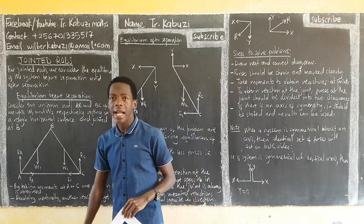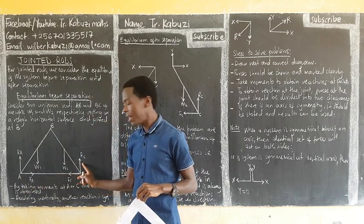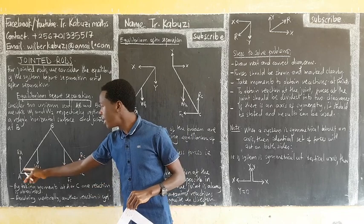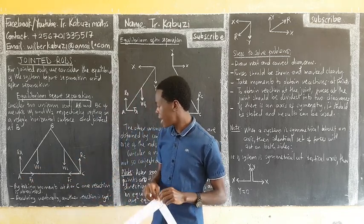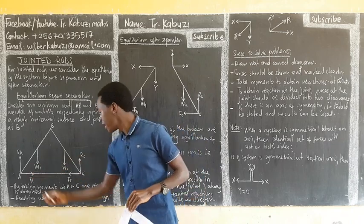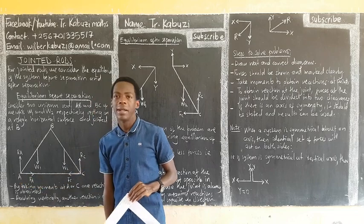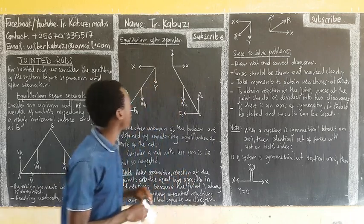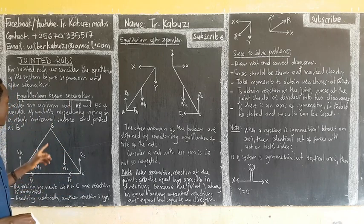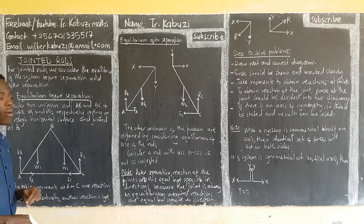If you take moments at A, you get the reaction at C. If you take moments at C, you get the reaction at A — as simple as that. If you are not sure, after taking moments at C and getting reaction at A, you can find the other reaction by resolving vertically. But you can get all reactions by simply taking moments — take moments at the opposite end from the reaction you want. When we want the reactions, we take moments before separation. Also note that these forces will always divide the line separating the two rods into two equal parts.